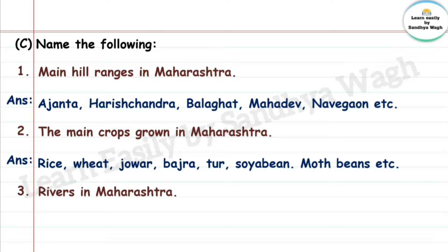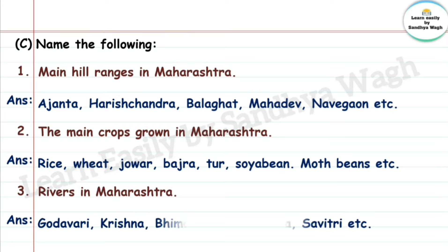Question 3: Rivers in Maharashtra. Answer: Godavari, Krishna, Bhima, Narmada, Sina, Savitri, etc.